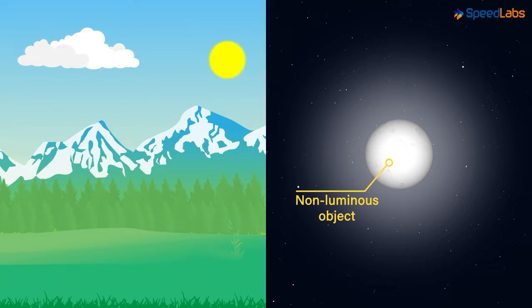As I said earlier, most of the objects that we come across in our daily life are non-luminous. We only see them because they reflect the light.